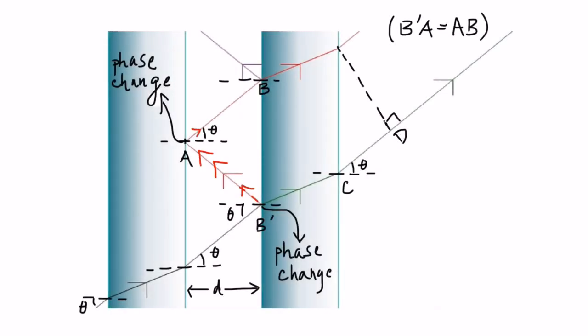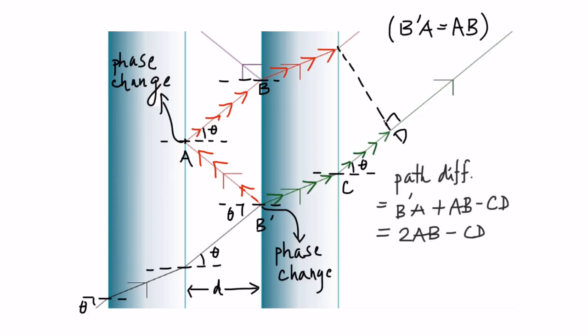The purpose of the mirrors and the distance between them is to create a path length difference between subsequent transmitted waves.